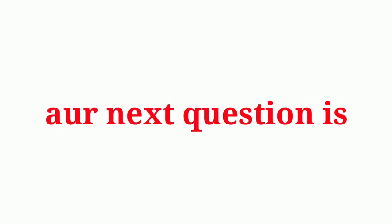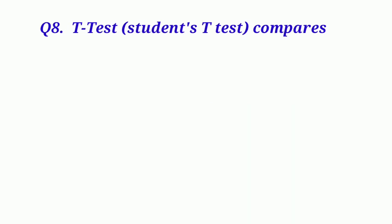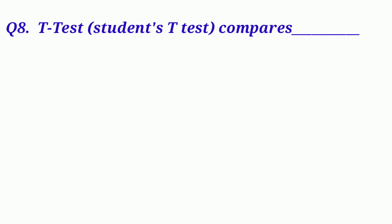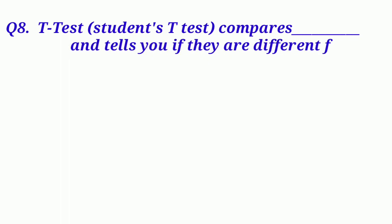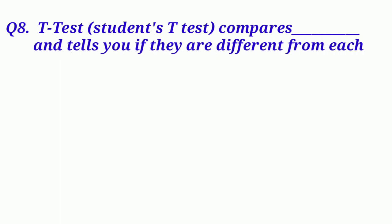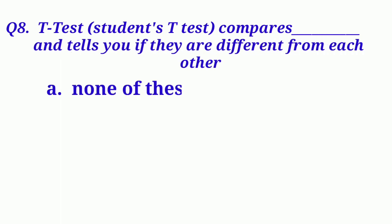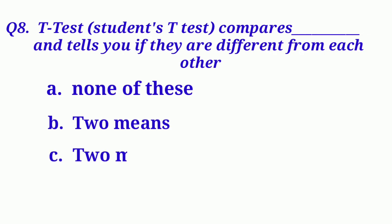Our next question is: T-test or student T-test compares and tells you if they are different from each other. Option A: None of these. Option B: Two means. Option C: Two medians. And Option D: Two modes.